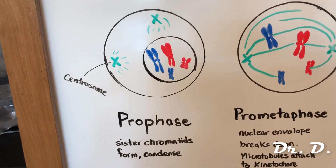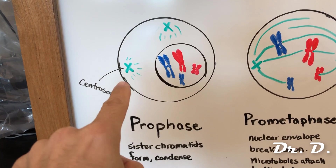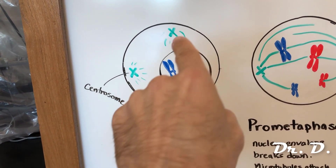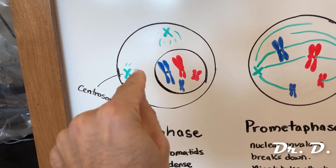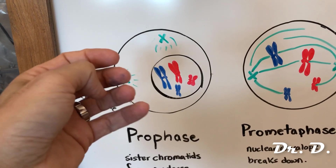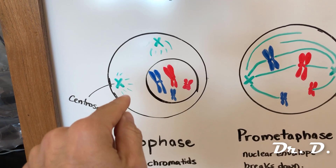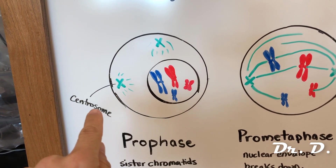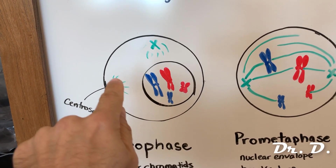We are now moving into mitosis, which starts with prophase. During prophase, the centrioles drift further apart toward opposite poles of the cell. The little green lines represent the mitotic spindle — microtubules being synthesized from the centrioles.